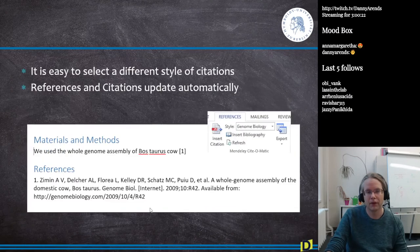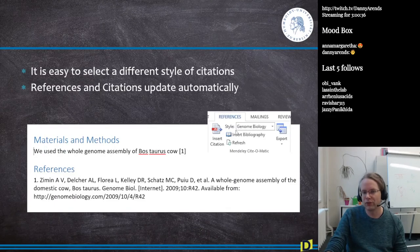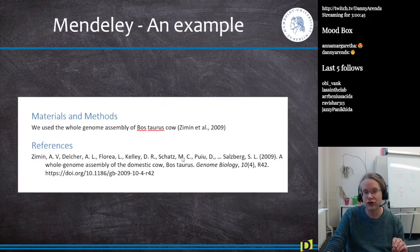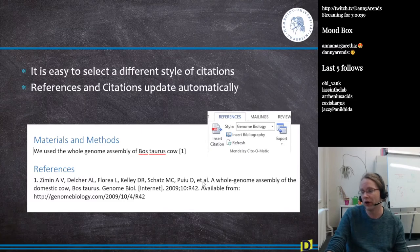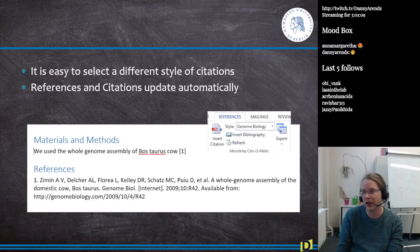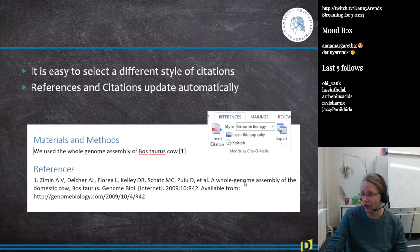Then I can add the bibliography by selecting a journal style from the drop-down — American Psychology, BMC Bioinformatics, Nature Genetics — and clicking Insert Bibliography. It inserts the complete reference in the correct format automatically. If Nature Genetics rejects my paper and I need to submit to PLOS Genetics, I just select a different citation style from the drop-down and everything reformats automatically. There are almost 1,500 different journal styles included in Mendeley.